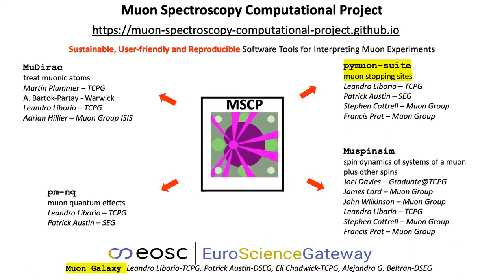The tools developed by the muon spectroscopy computational project are shown here, and in this talk I will focus on PyMuonSuite, which is the tool we use to find the stopping sites of muons in crystalline materials. In particular, I will focus on how to use the implementation of PyMuonSuite in the Galaxy platform.